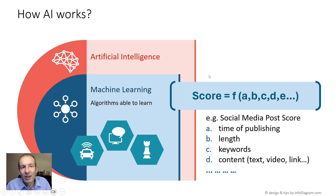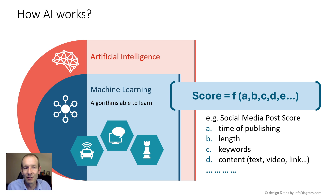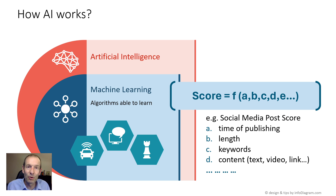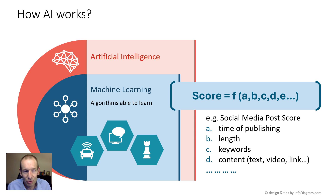Machine learning tries to calculate some score or value based on several parameters. Imagine you wrote a social media post on LinkedIn or Facebook, and the AI system has a task to decide how relevant that post is for your community — how high it should be ranked on someone else's social media feed. The parameters it considers are probably the time of publishing, the length of the post, what keywords were used, the context, and the content — for example, whether you included a video or an external link. All these things are considered to calculate the score of the post. That is essentially the formula that machine learning calculates.